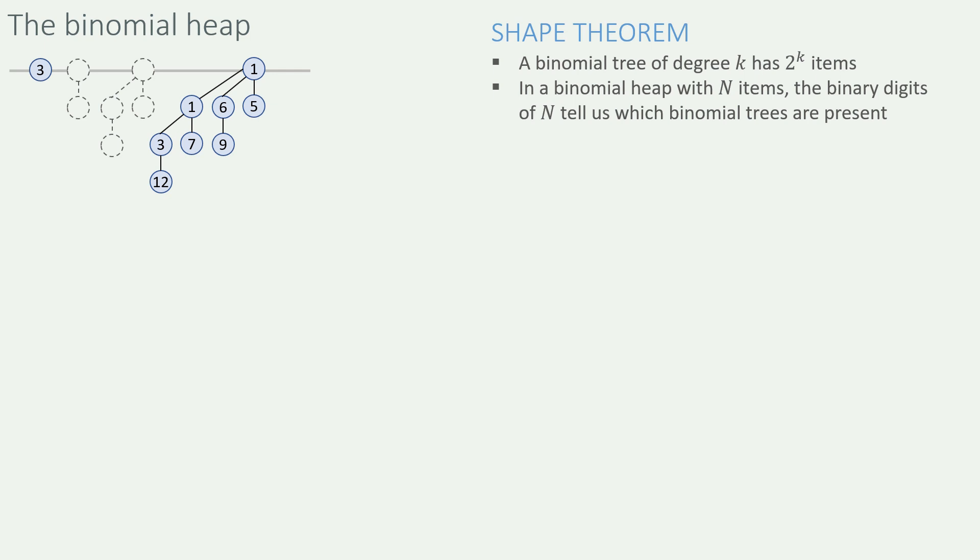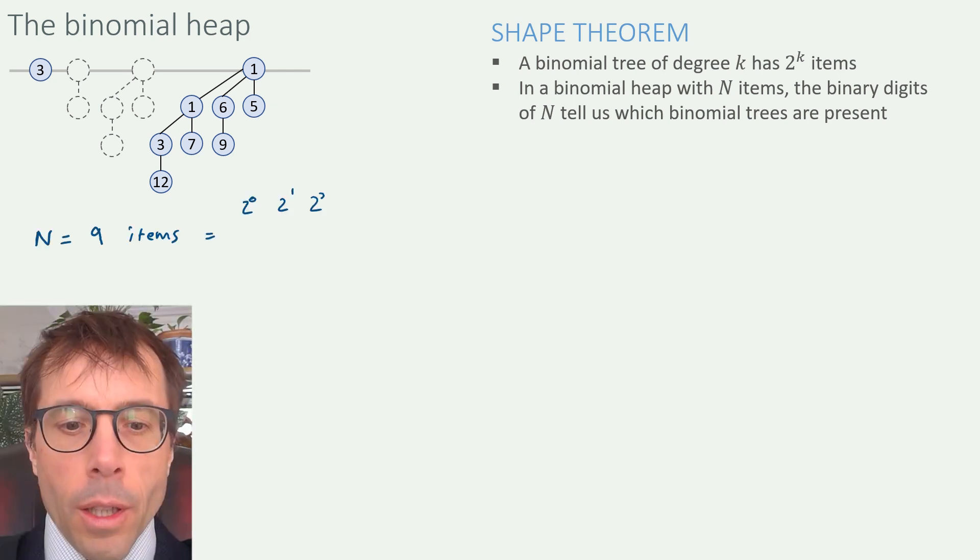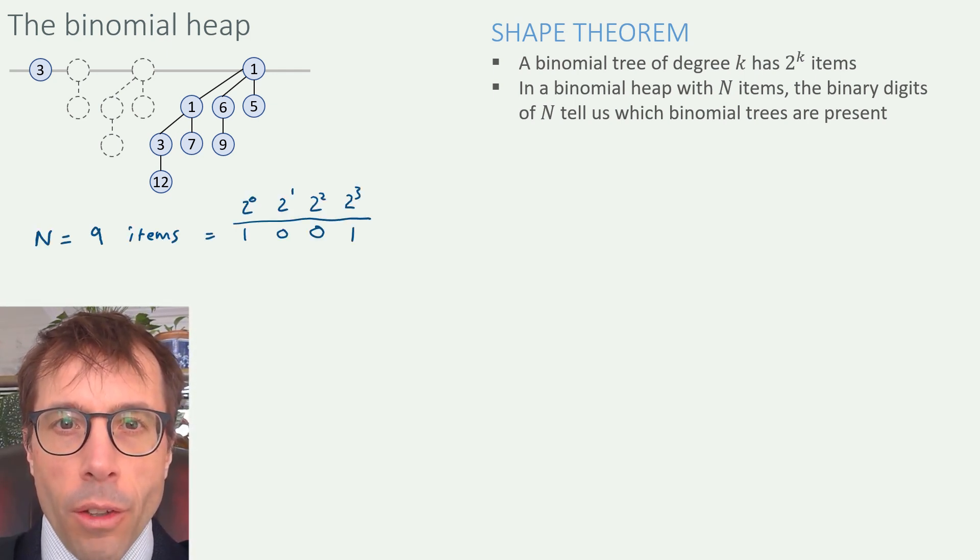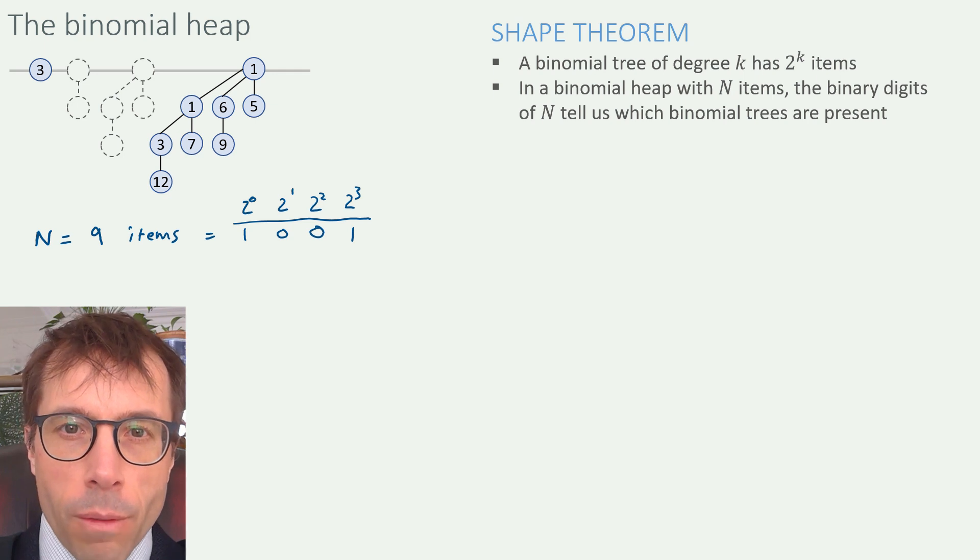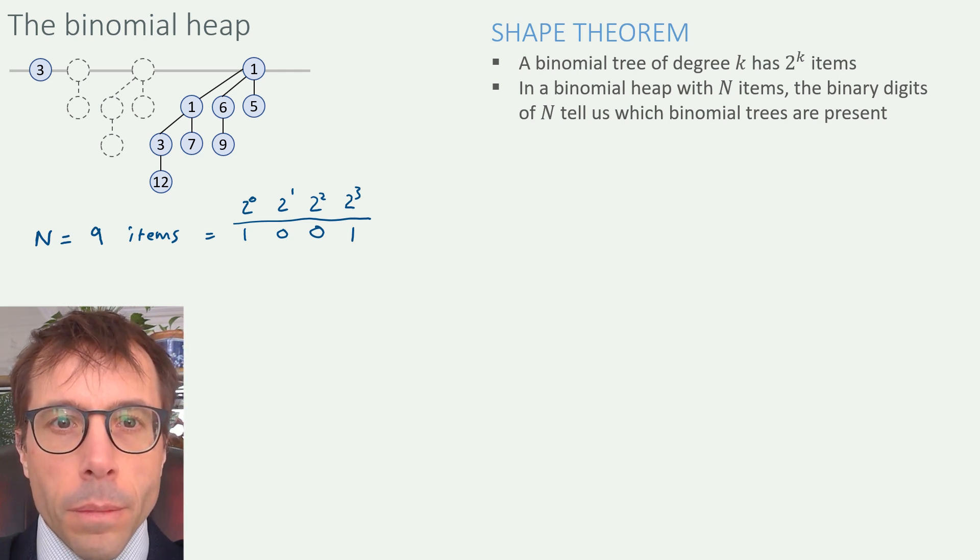When you look at the tree sizes in a given binomial heap, the tree sizes have a very nice property. A tree of degree k has 2^k nodes in total. That's just a simple consequence of the recursive way that binomial trees are defined. And so the presence or absence of a tree of any given degree in a binary heap of size n corresponds to the digits when we write out n in binary. Let's look at this heap here. It has nine items in total. Nine is one, i.e. 2^0, plus eight, i.e. 2^3. Or in binary, it's 1001. I've ended up writing my binary numbers backwards here, the least significant digit on the left, just because by habit I write my binomial trees that way around. But you can see the general pattern very clearly. Pretty much anything we do with a binomial heap ends up being related to powers of two and to binary digit expansions.